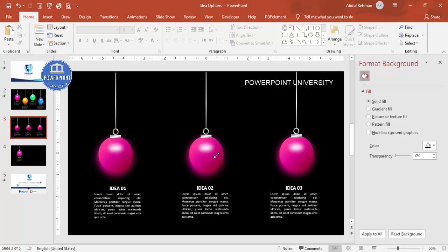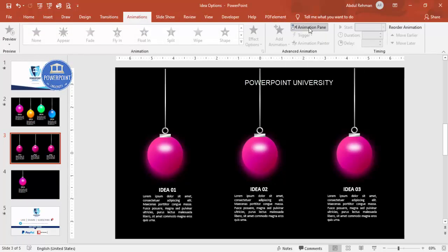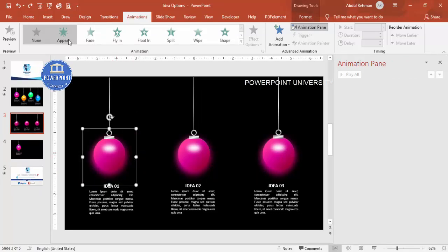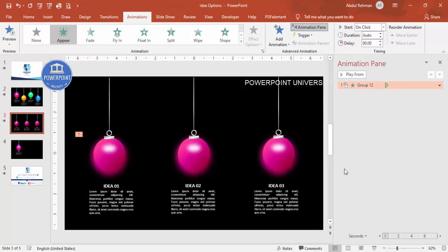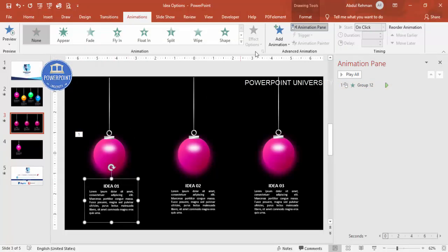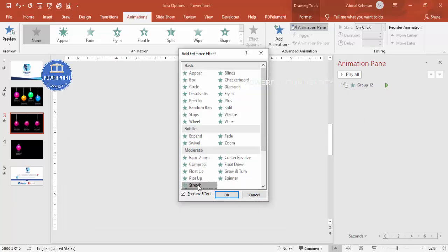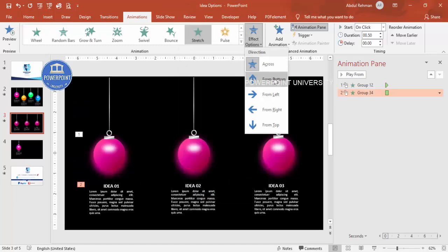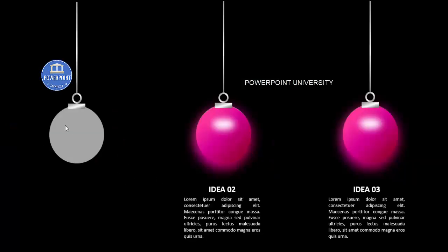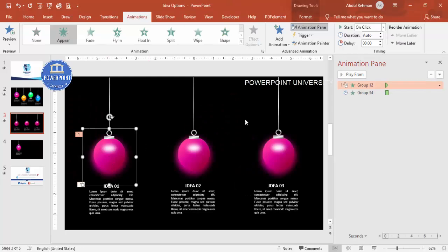Now for the animation part. Close Format Background, go to Animations, and enable the Animation Pane. The bulb groups are already grouped. Add an Appear animation to the first group — when clicked, it appears. For the glow/text group, go to Add Animation, More Entrance Effects, and select Stretch. Set it to start from the top and start After Previous. When played: click once, the gray bulb appears, then it glows and the text comes in.